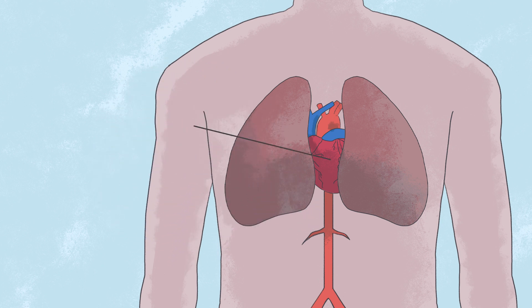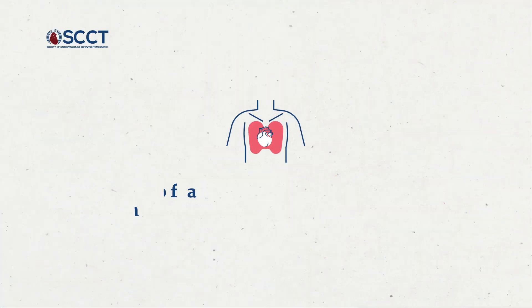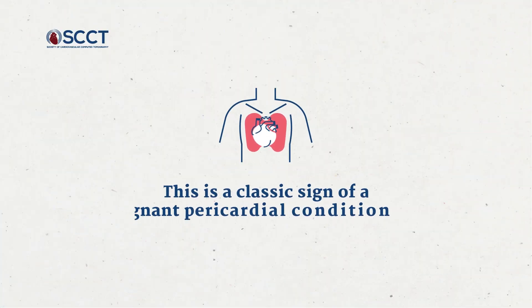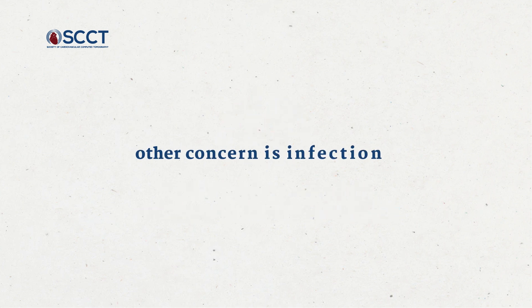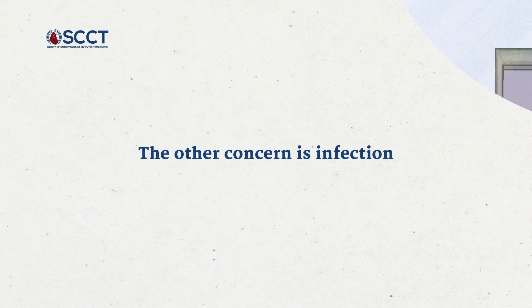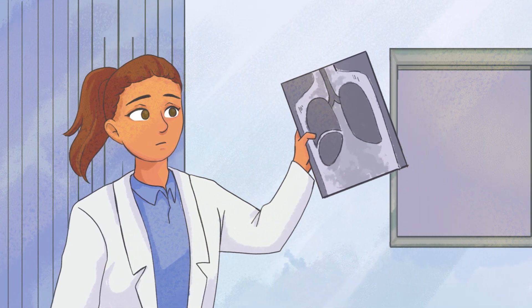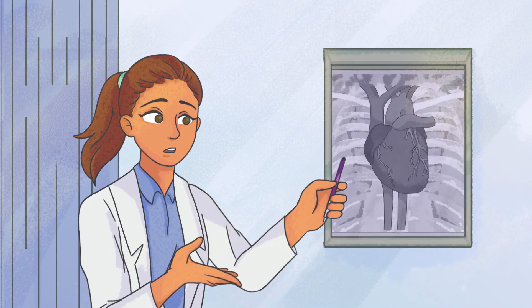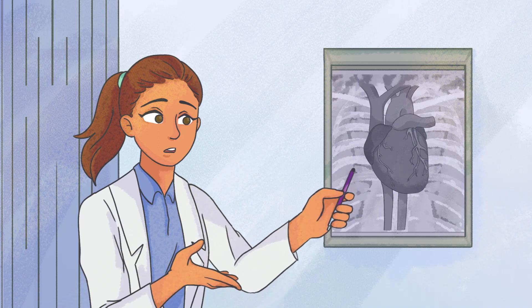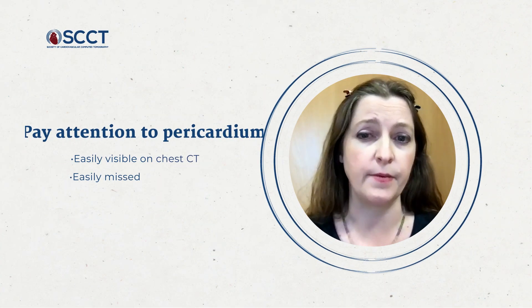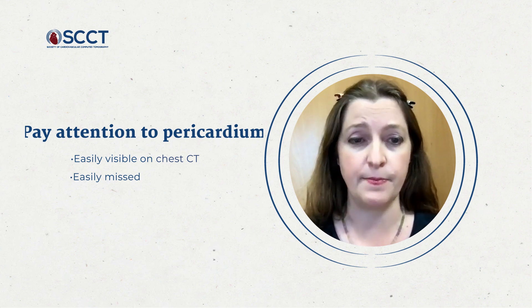Here you can see the pericardium is thickened and irregular. This is a classic sign of a malignant pericardial condition. The other concern is infection. Here is a patient with a large subdiaphragmatic abscess, and two days later they developed this small infective pericardial connection. So pay attention to the pericardium — it's easily visible on chest CT and easily missed.